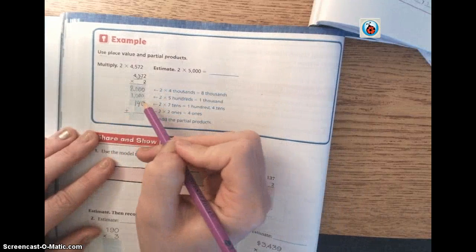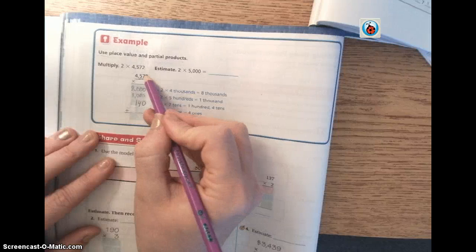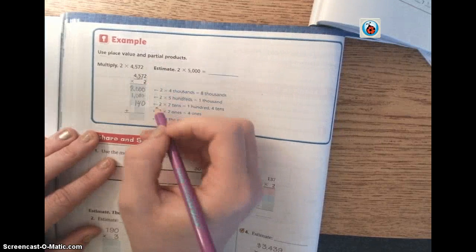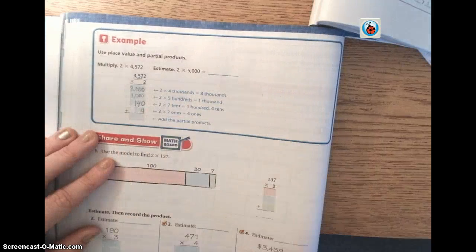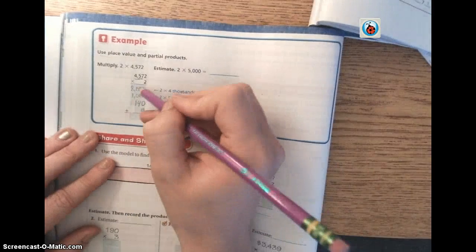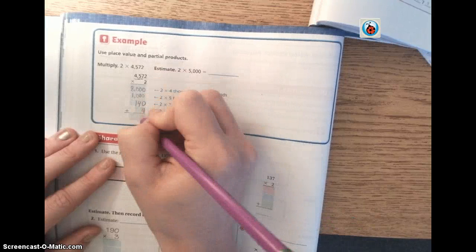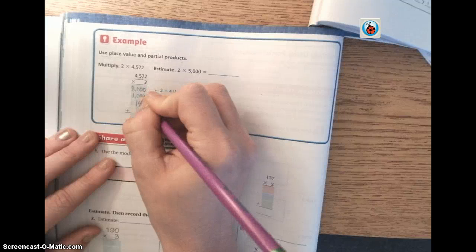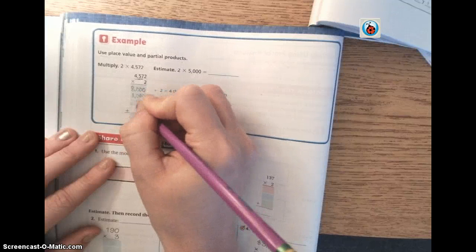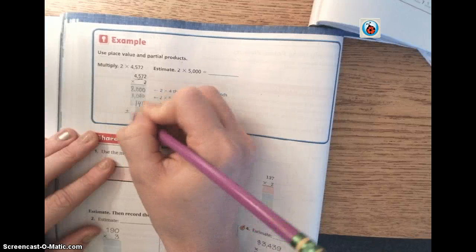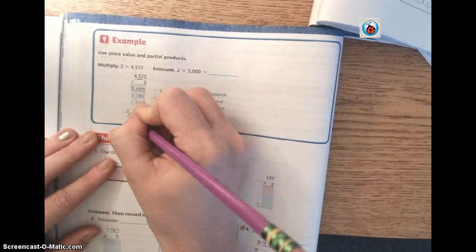And then down here we have 2 times 2, and that is actually just 2 times 2, because both of those digits are in the ones place. So 2 times 2 is 4. Now we just have to add these four numbers up. 0 plus 0 plus 0 plus 4 is 4. 0 plus 0 plus 4 is 4. 0 plus 0 plus 1 is 1. 8 plus 1 is 9.